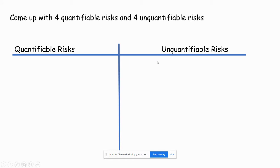Unquantifiable risks are things you cannot predict and cannot put a number on — new competitors, new laws, civil unrest, global pandemics. You can't easily predict these or put a number on how they'll affect you because you don't know exactly how they will. They're the bigger picture things. They're less possible to insure because you don't know what you'd be insuring against, or you wouldn't know how much it's worth to insure around it. That's the difference between quantifiable and unquantifiable risks.